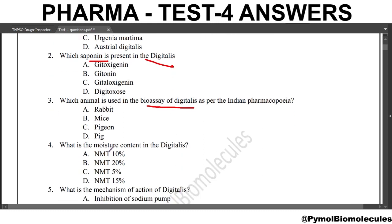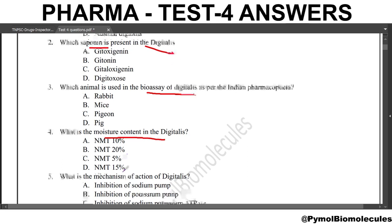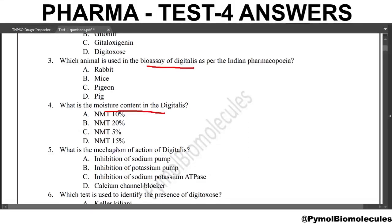Next question: what is the moisture content in digitalis? The answer is not more than 5%. Since digitalis gets deteriorated by hydrolytic enzymes, the moisture content should not be more than 5%. Next question: what is the mechanism of action of digitalis? The answer is inhibition of sodium-potassium ATPase.